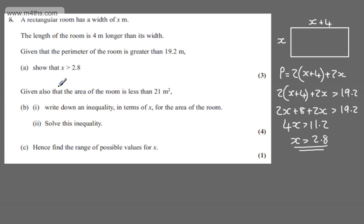It now says, given also that the area of the room is less than 21 meters squared, in part B for 4 marks, we first have to write down an inequality in terms of x for the area of the room, and then in the second part, solve this inequality.